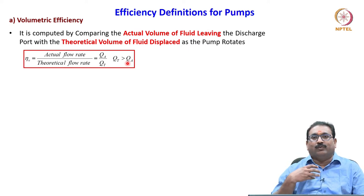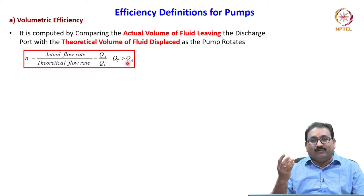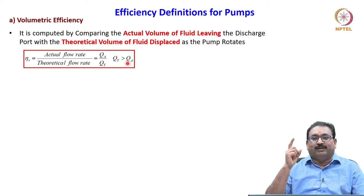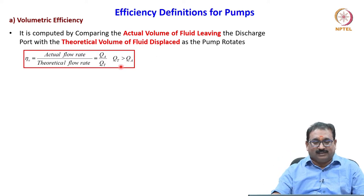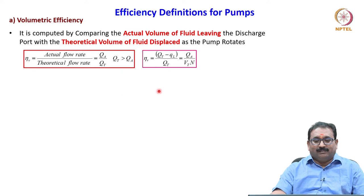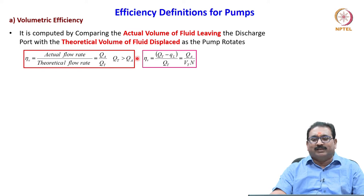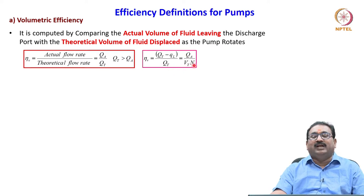We want maximum volumetric efficiency, meaning a close tolerance between the rotating element and the housing. QA is always less than QT — by the leakage QL. So QA equals QT minus QL divided by QT, which relates to VT into N.